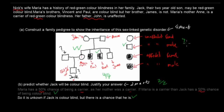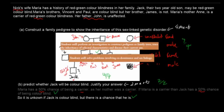That pedigree part was worth four marks out of four. These questions come from two syllabus dot points: the first is that students will perform a first investigation to construct pedigree or family trees and trace the inheritance of selected characteristics and discuss their current use. The second is that students will solve problems involving codominance and sex linkage — and this was a sex-linkage problem.